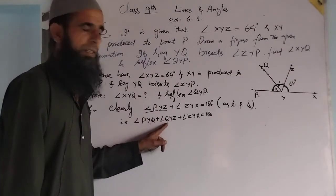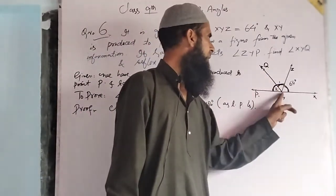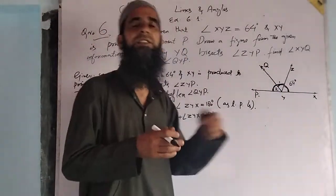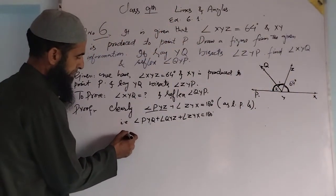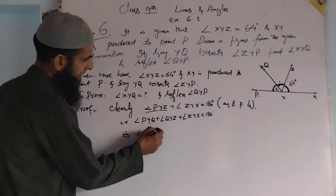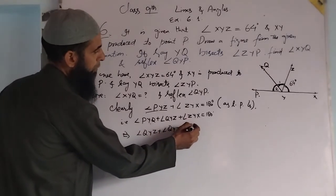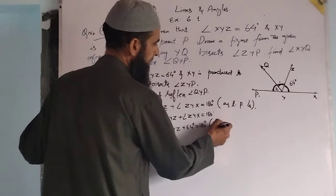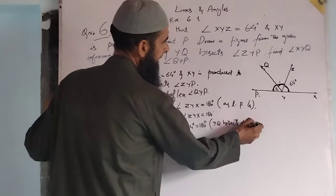Angles PYQ and QYZ are equal, as YQ bisects angle PYZ. Therefore, substituting: angle QYZ plus angle QYZ plus 64 degrees equals 180 degrees — because as YQ bisects angle PYZ, angle PYQ equals angle QYZ.